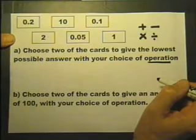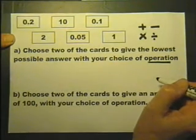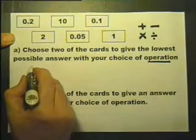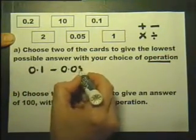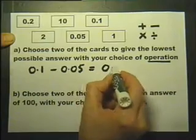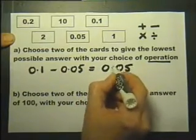Now, I reckon the smallest answer we can get is to take the two smallest values that are there and subtract them. That's what I reckon.